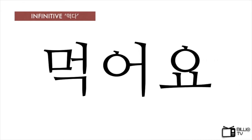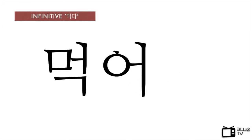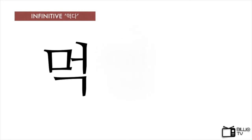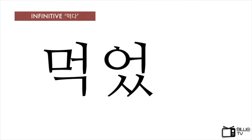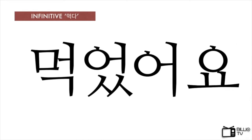Next one is 먹어요, which is the A-Oyo form of 먹다 in the present tense. Let's do it again. First, remove 요. Second, add 쌍시옷 under the last letter of the stem. And then, place 어요 next to the stem. So, 먹어요 becomes 먹었어요, which means 'ate.'